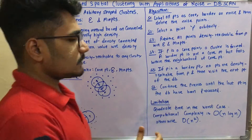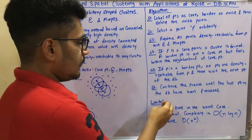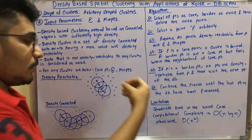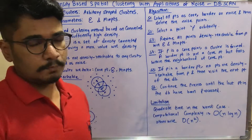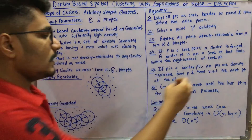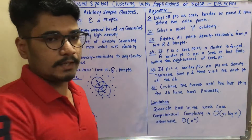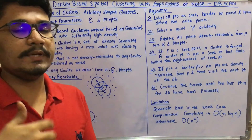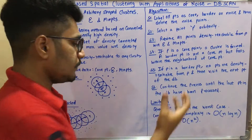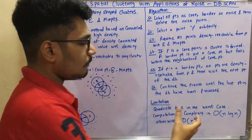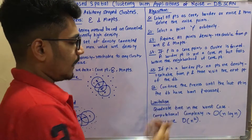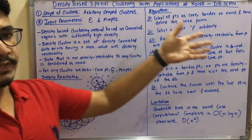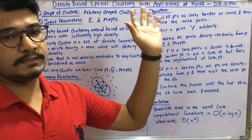DBSCAN has one notable limitation regarding time complexity. The normal computational complexity is O(n log n), where n is the number of data points. However, in the worst case scenario it becomes O(n²) — quadratic time — which is a limitation of DBSCAN as a density-based clustering technique.